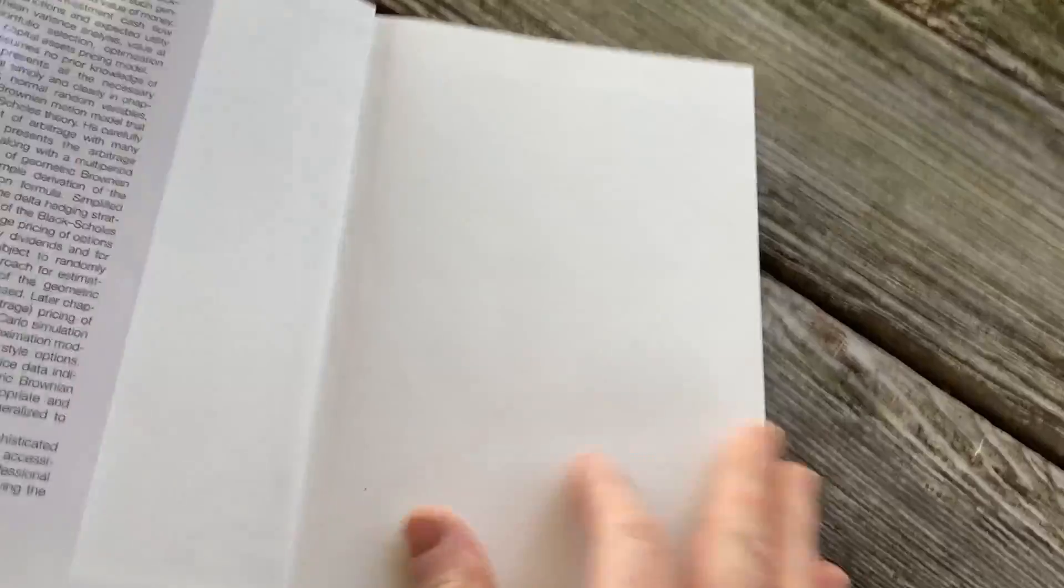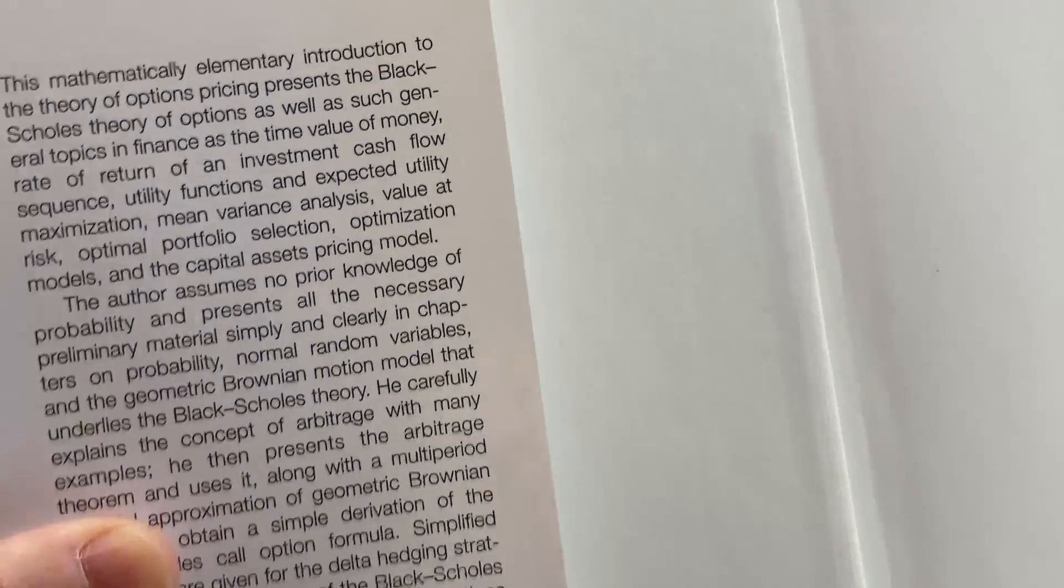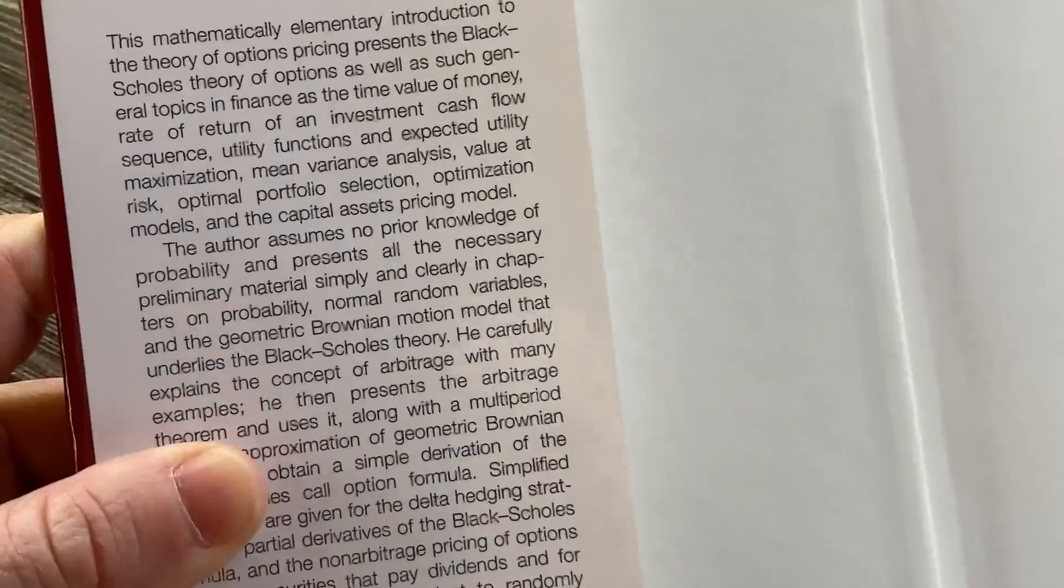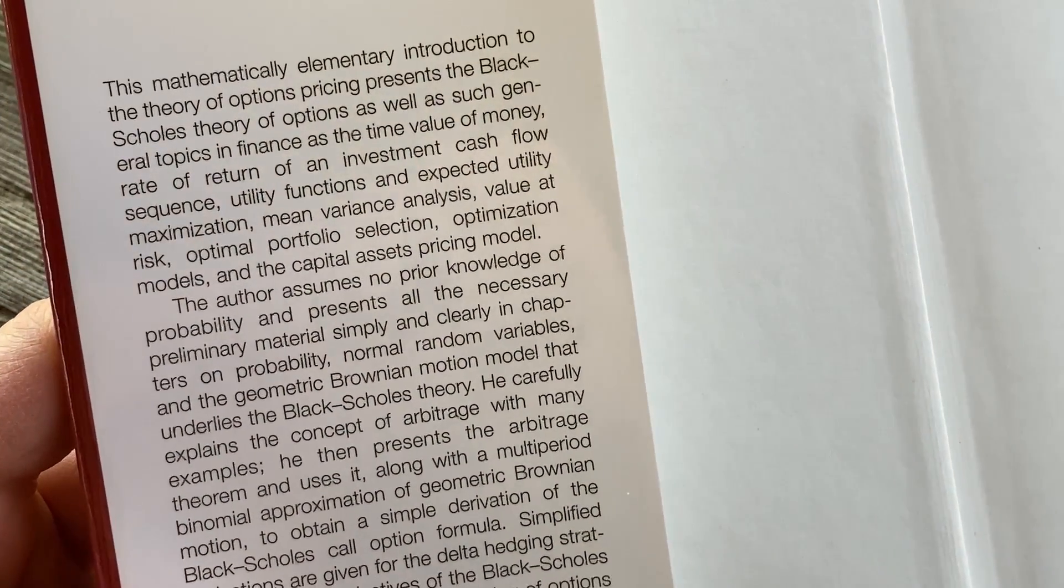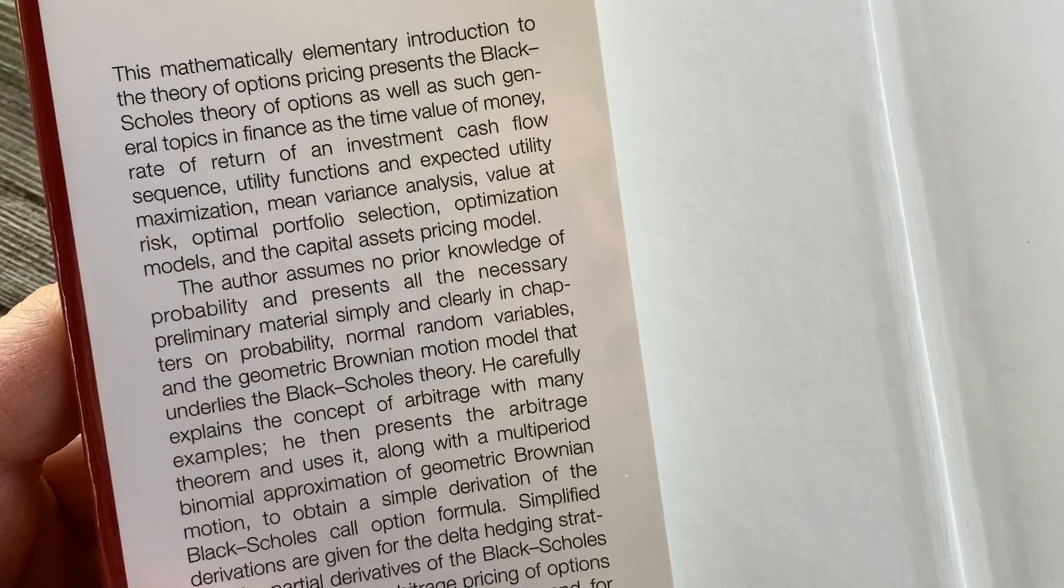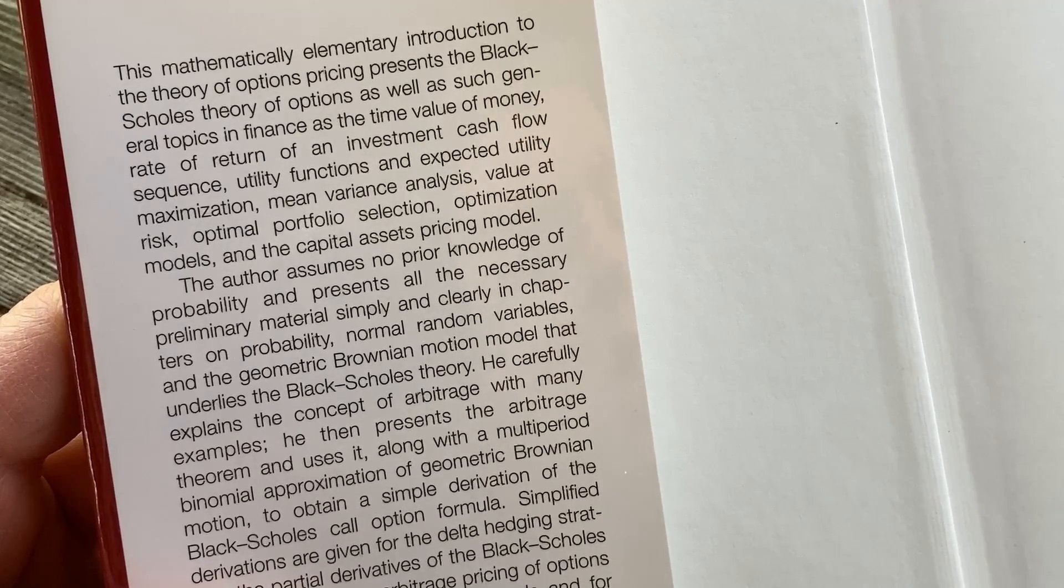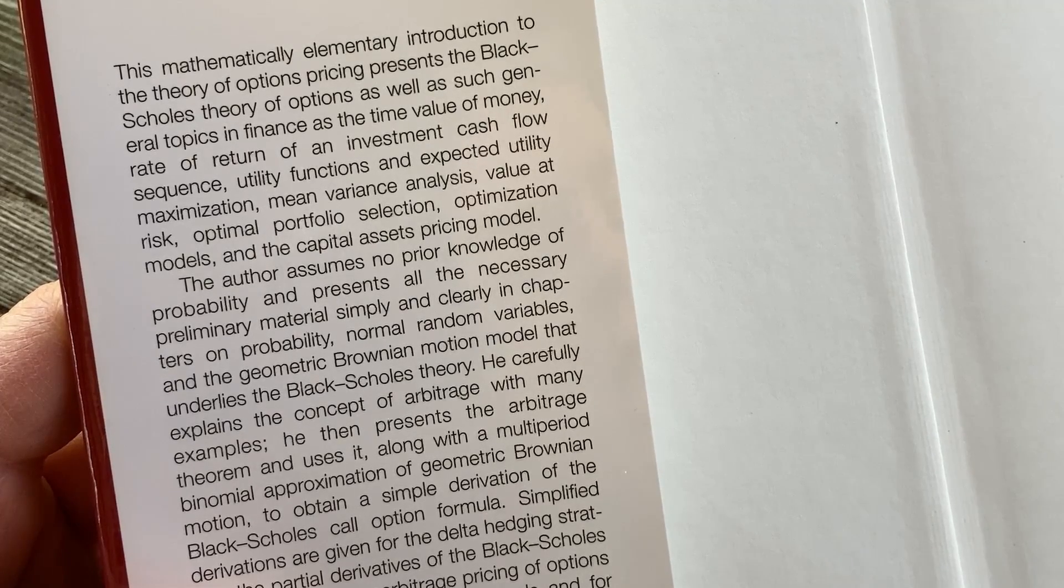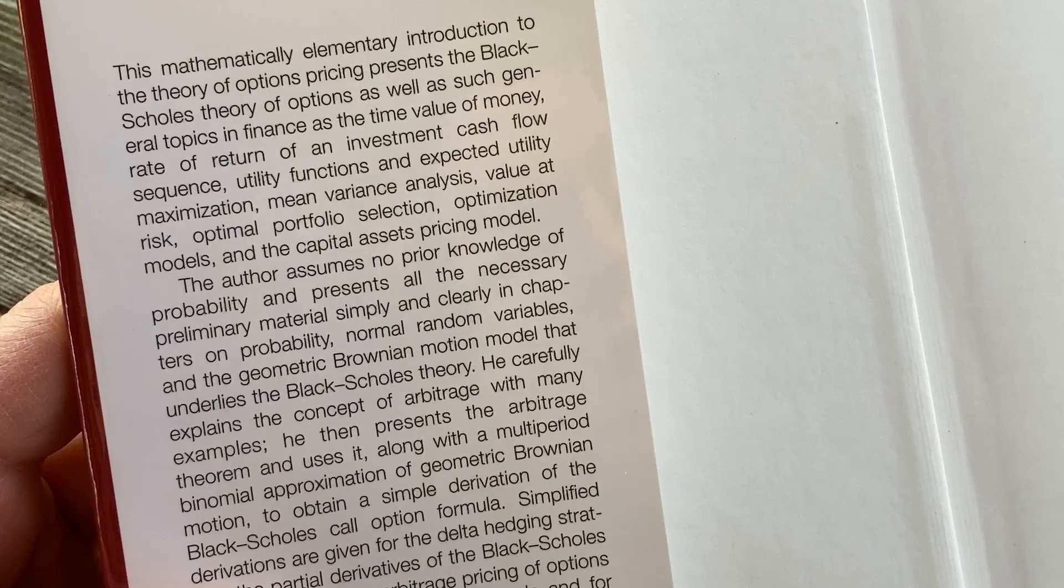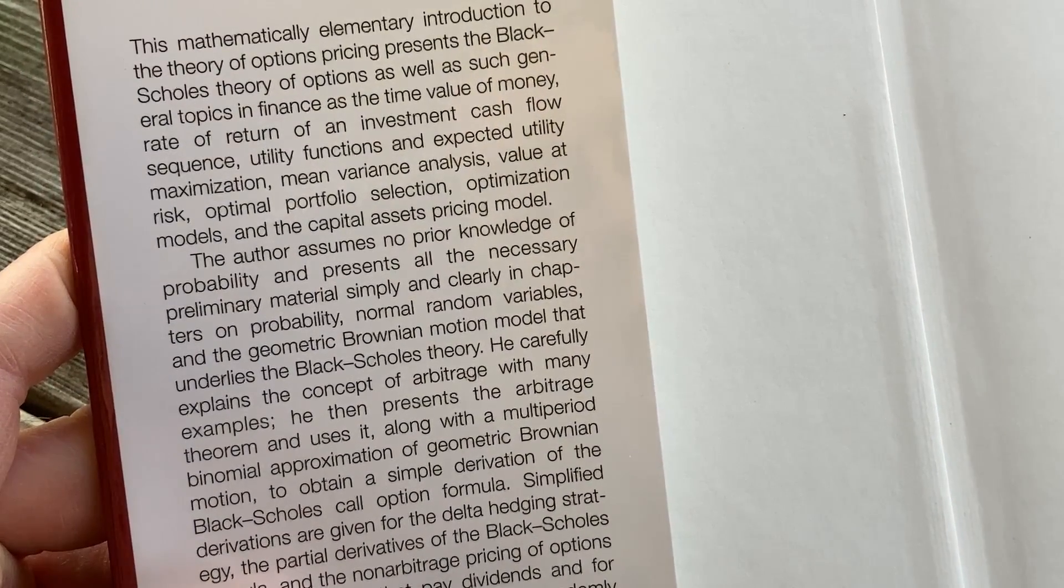So this one I paid for. Okay I bought this book and then here let's read a little bit about it. So I think this is a fun book. If you really want to learn mathematical finance this is a really cool book. I'll leave a link in the description in case you want to check it out. I don't know how much this book costs but I believe it's worth every penny. I mean I bought it. So the mathematical elementary introduction to the theory of options pricing presents the Black-Scholes theory of options as well as such general topics in finance as the time value of money, rate of return of an investment, cash flow sequence, utility functions, and expected utility maximization, mean variance analysis, value at risk, optimal portfolio selection, optimization models, and the capital assets pricing model.